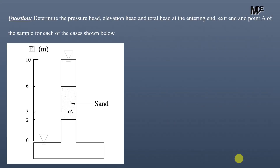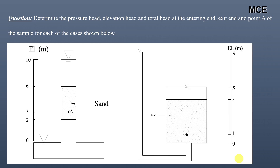Hello and welcome back to Master Civil Engineering. In this video you will learn how to find the pressure head, elevation head, and total head in a soil sample under steady seepage conditions. We have two questions: find the pressure head, elevation head, and total head at the entry end, exit end, and point A of the sample for these two cases.